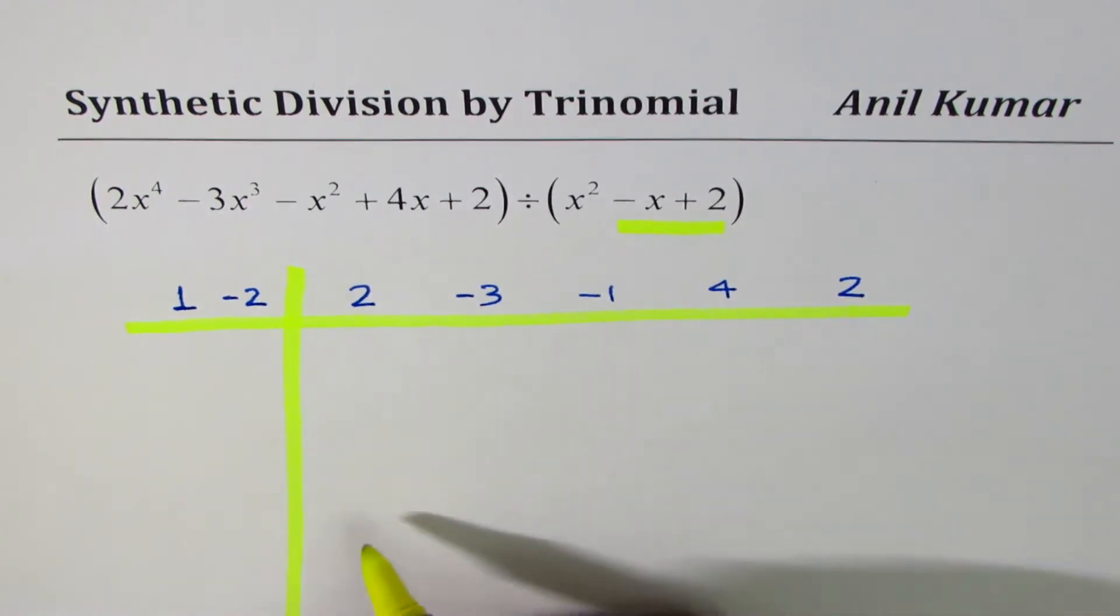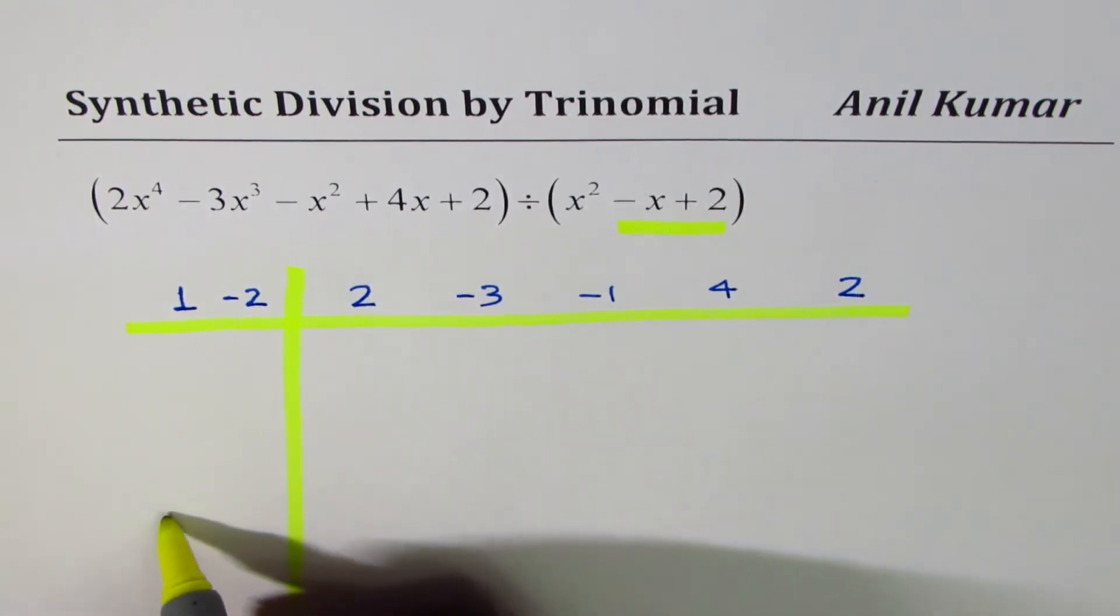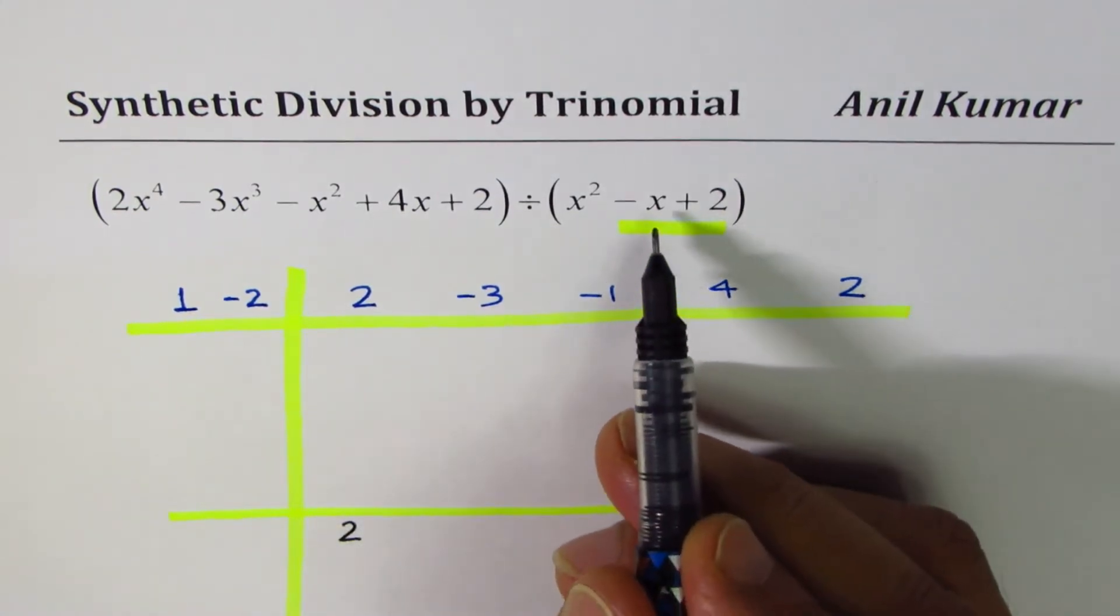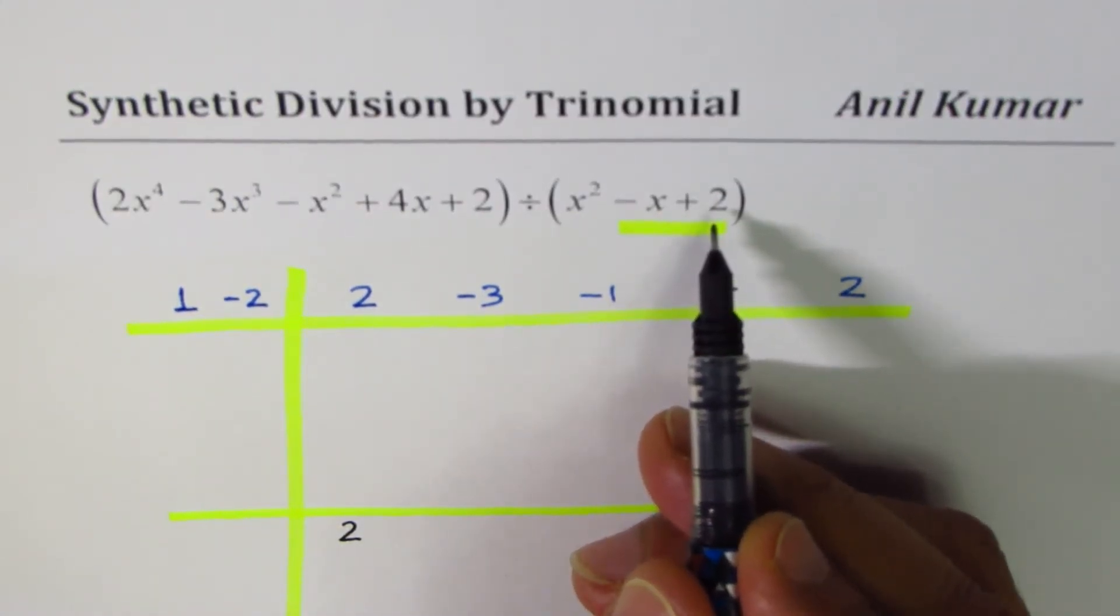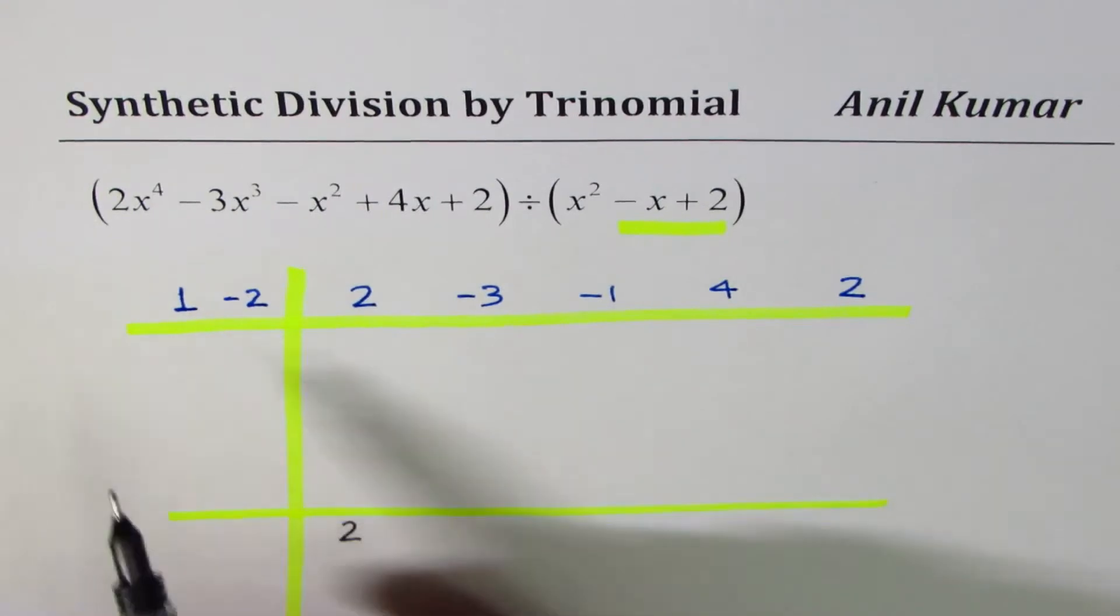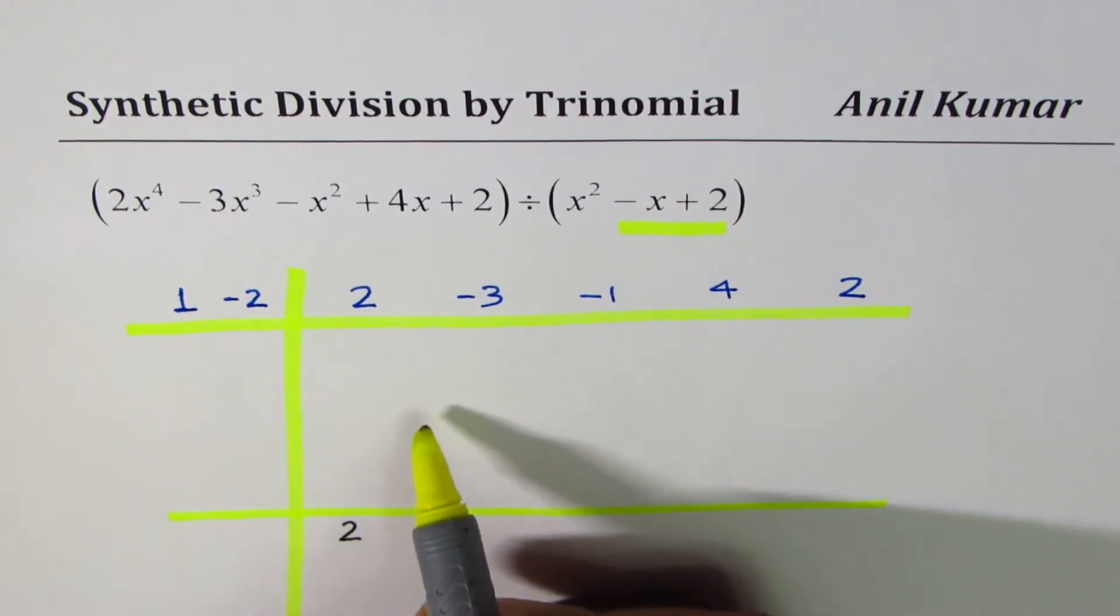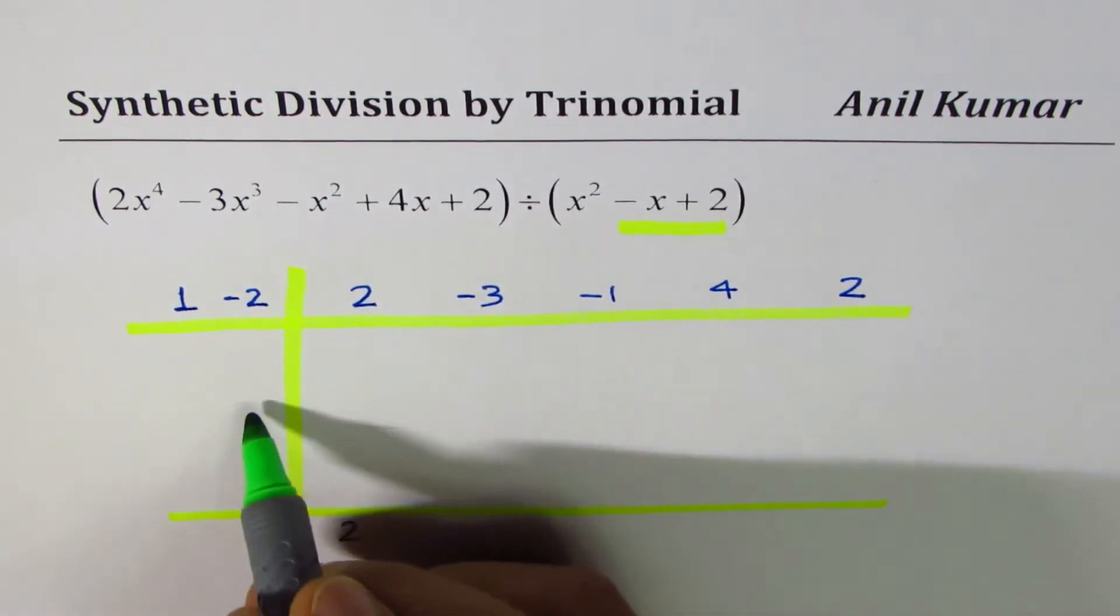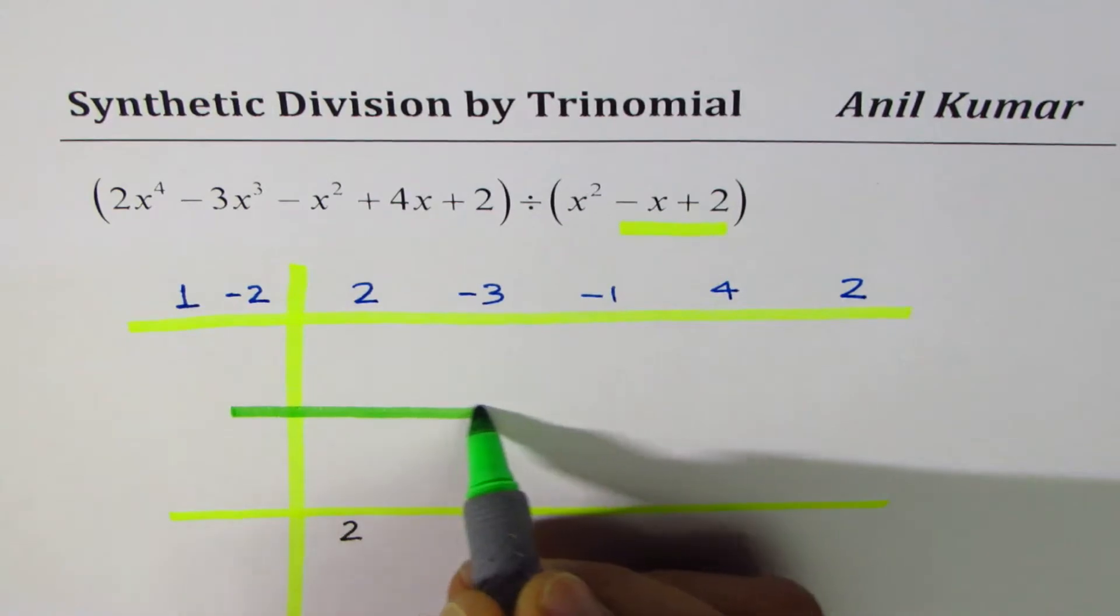Earlier you had a line here so that you could bring down the first number right away to the bottom. You were dividing by a linear factor. Now we have two of these on the left side. When we divide by minus 2, we need a placeholder for that also, so we introduce another line here. We have another layer.